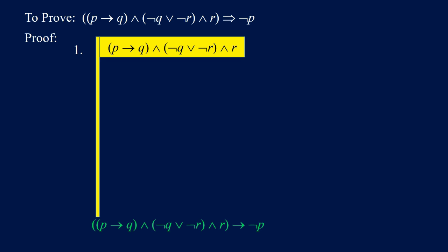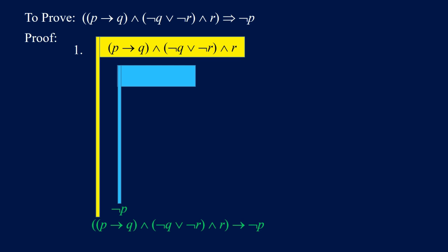The conclusion is not P, so we introduce another flag and put P in the flag, indicating this with 2, and try to get FALSE under the flag. To get FALSE we need something and the negation of that something. There are two candidates: Q and not Q, or R and not R. We will use R and not R.